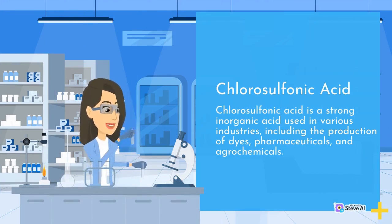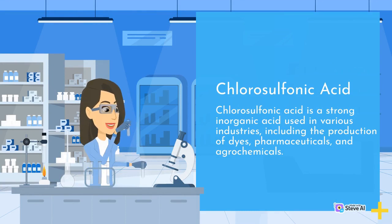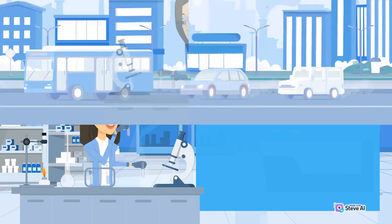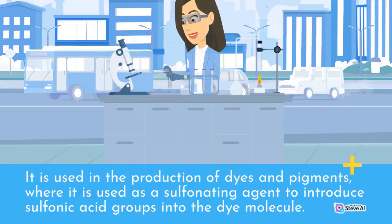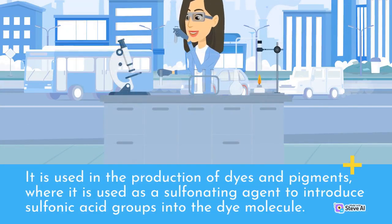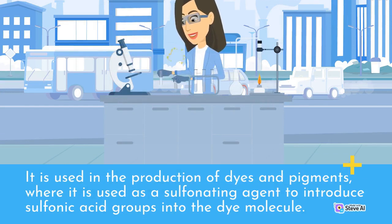Chlorosulfonic acid is a strong inorganic acid used in various industries including the production of dyes, pharmaceuticals, and agrochemicals. It is used in the production of dyes and pigments, where it acts as a sulfonating agent to introduce sulfonic acid groups into the dye molecule.